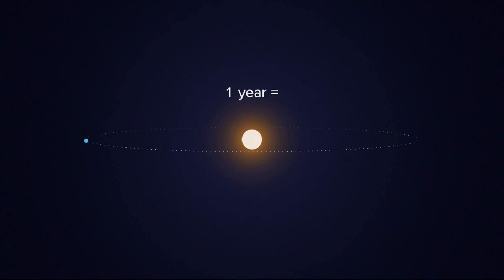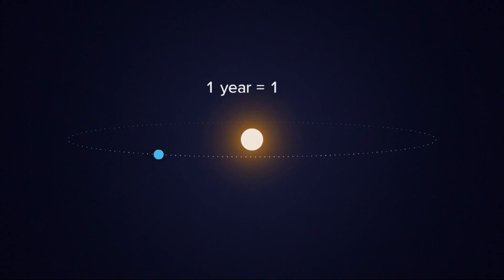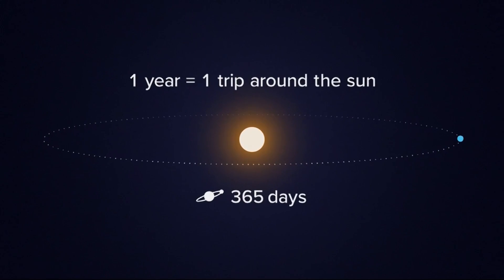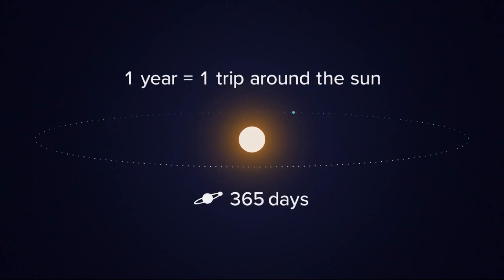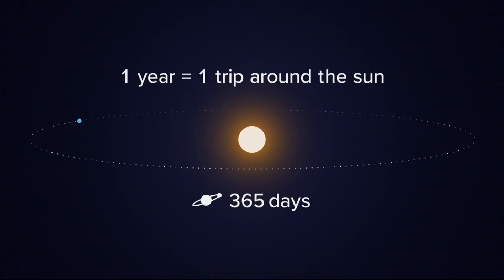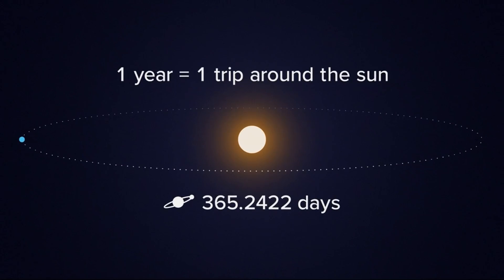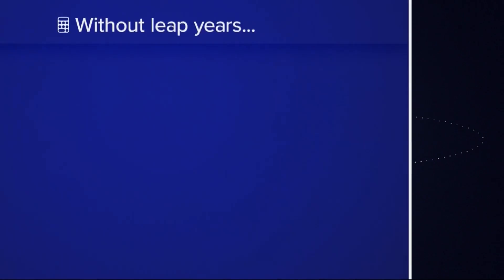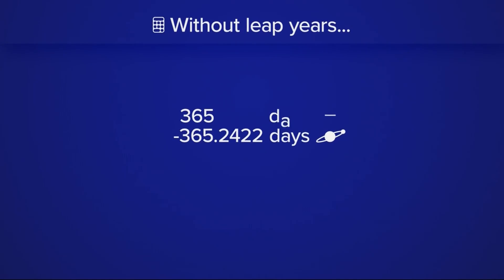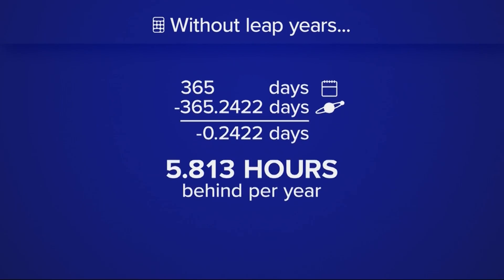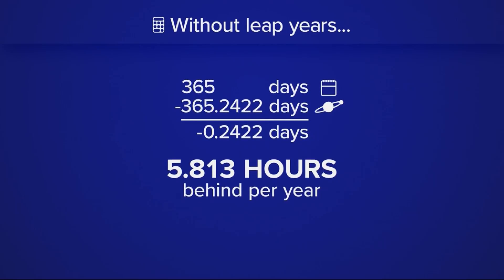Well, the earth takes one year to revolve around the sun, right? Not exactly. It actually takes 365.2422 days.